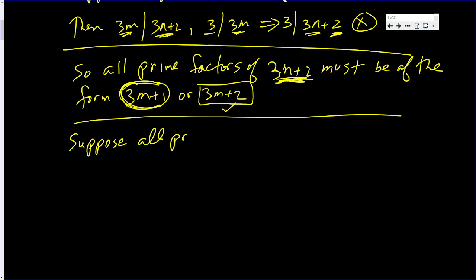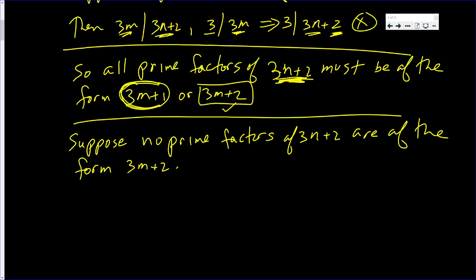Suppose no prime factors of 3n plus 2 are of the form 3n plus 2. So 3n plus 2 must, when we prime factor it, must be of the form 3a plus 1 times 3b plus 1,